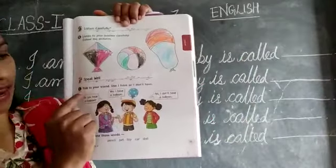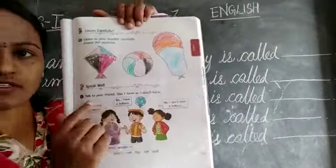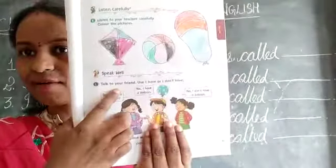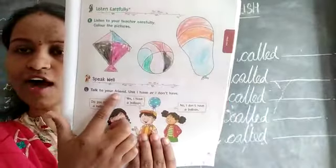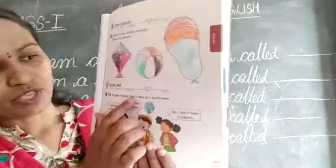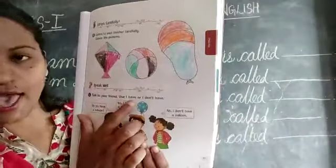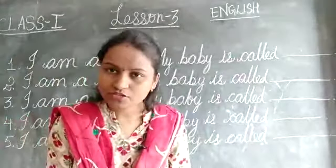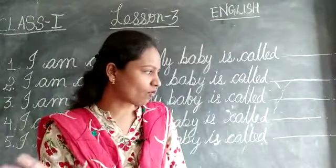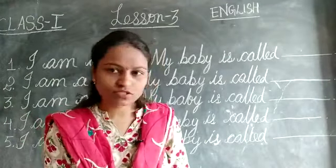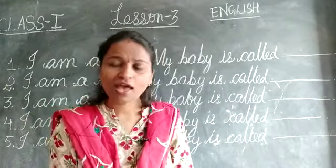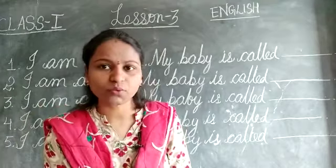Speak well. Talk to your friend — T-A-L-K, T-O, Y-O-U-R, F-R-I-E-N-D, friend. Use 'I have' or 'I don't have.' What you have to use, children — 'I have' or 'I don't have.' Where you have to use 'I have' and where you have to use 'I don't have'?